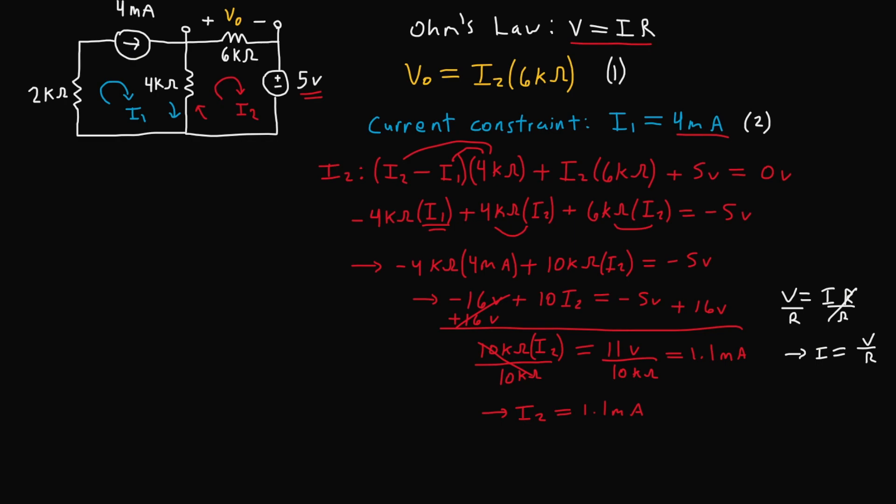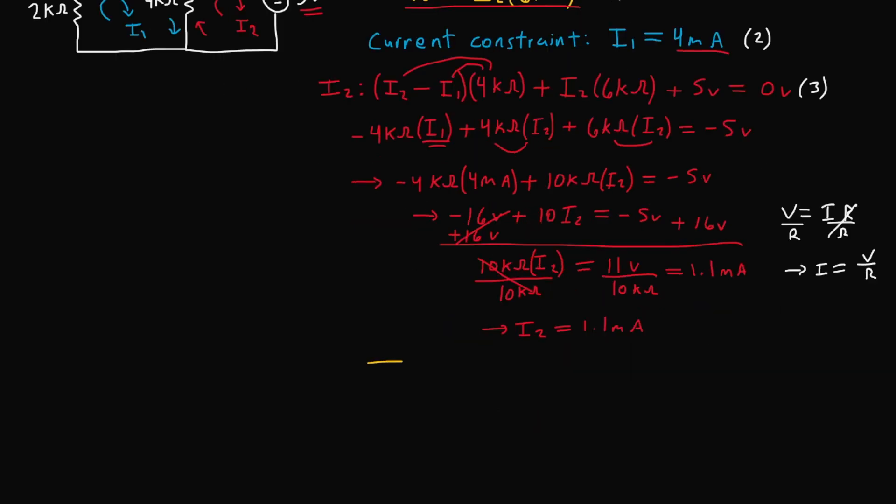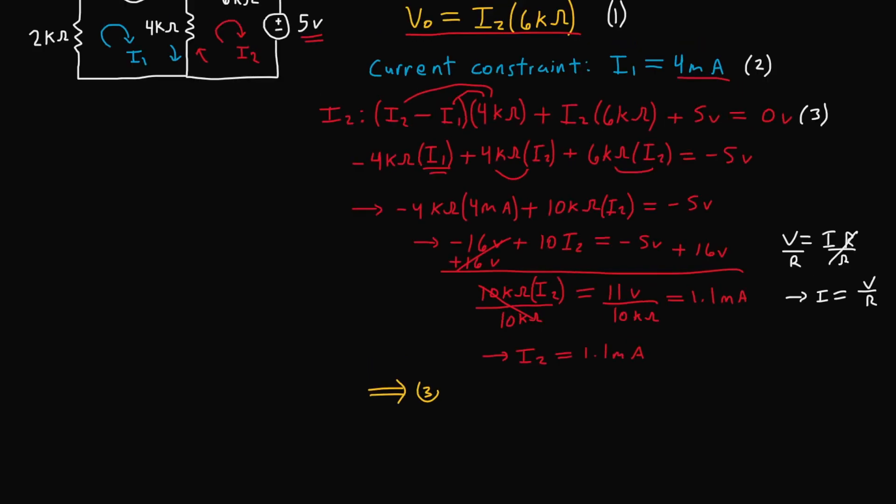Now that we know what I₂ is, we can finally simply solve for V₀, which is I₂ times 6 kilo ohms. Hence substituting the value of I₂, which in this case is equation 3 into equation 1, we get V₀ equals 1.1 milliamps times 6 kilo ohms.